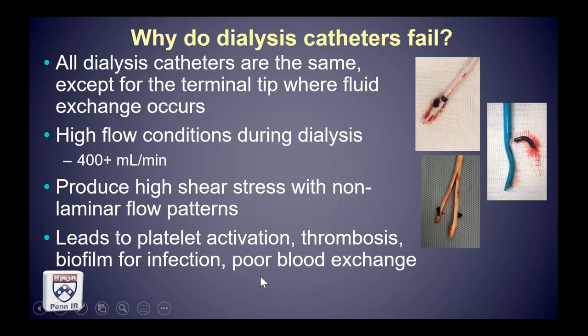Dialysis catheters are all the same except for the tip, and the tip is where fluid exchange occurs. During hemodialysis use there are high flow conditions — 400 milliliters per minute is typical. When you exchange blood through a catheter at flow rates vastly higher than a typical IV line or PICC line, it produces immense near-wall shear stress factors with non-laminar flow patterns.